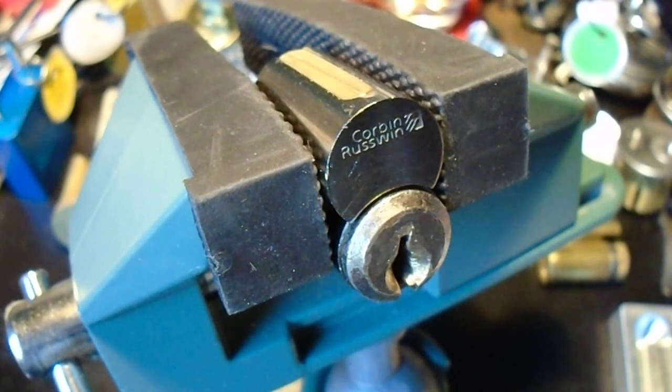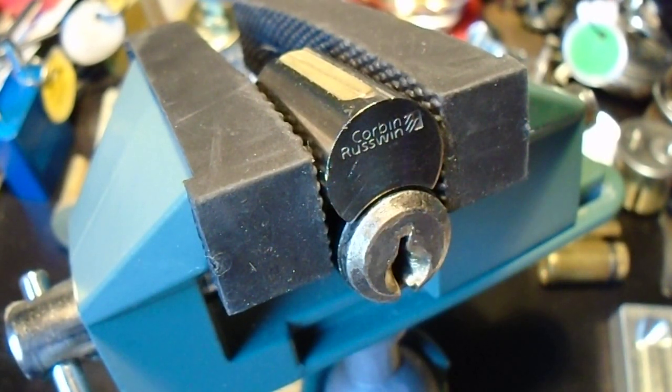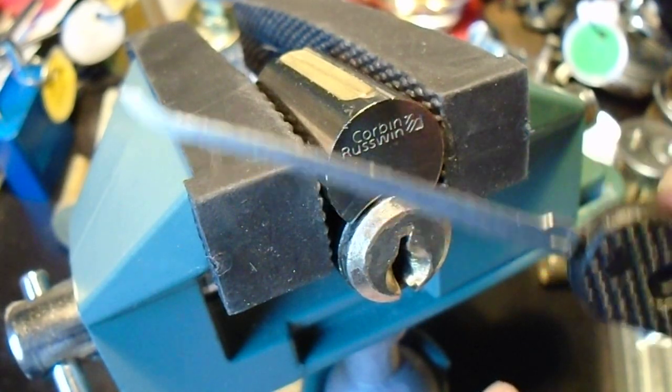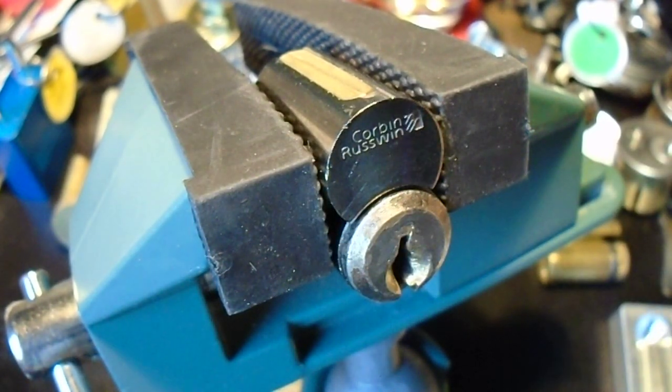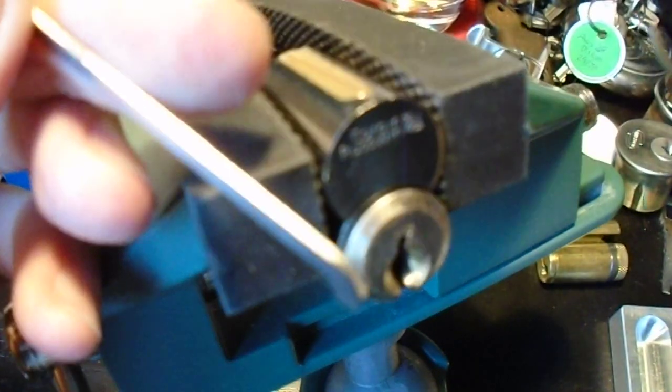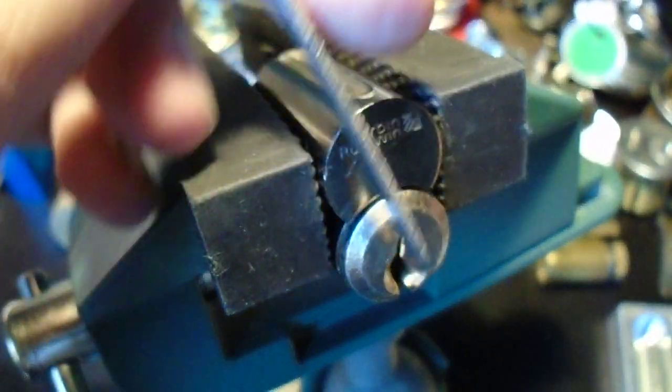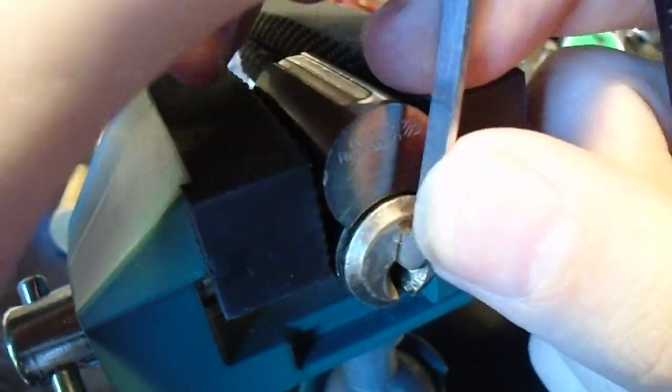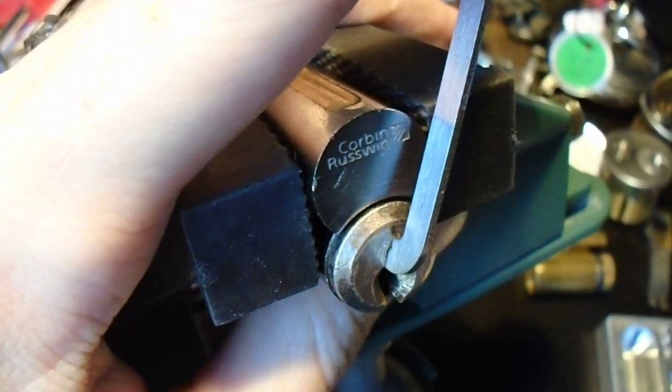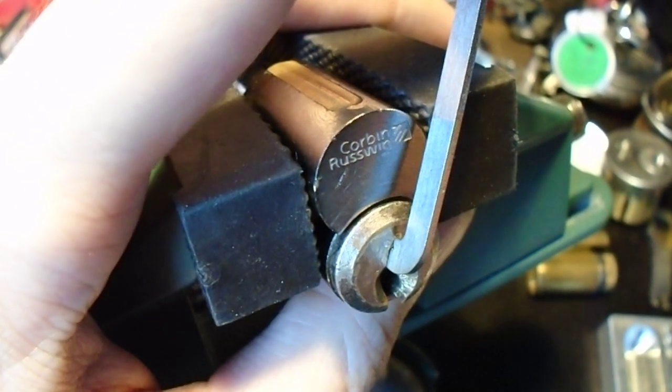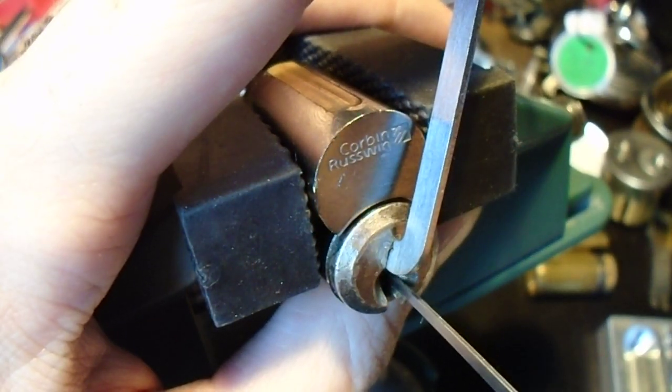Alright, here we go. So it is a fairly wide open keyway, so we'll use our standard thickness small hook. But it's just a little bit too narrow for us to use the thicker Peterson pry bar, so we'll use the thin one. Get that seated in there. Make sure we've got good tension, not too much.